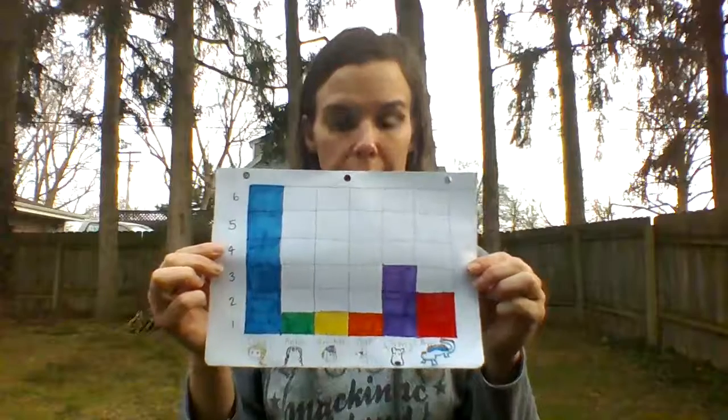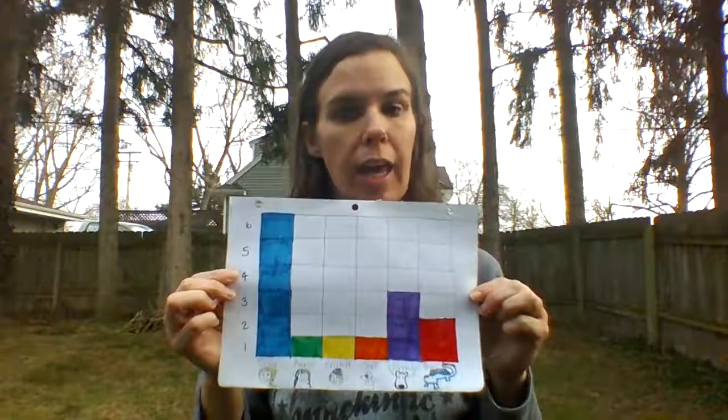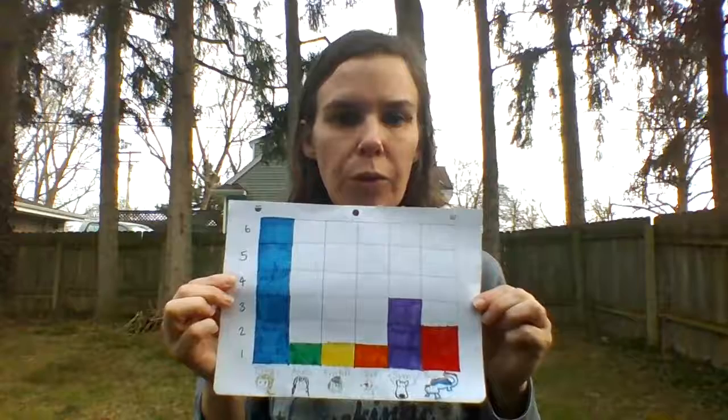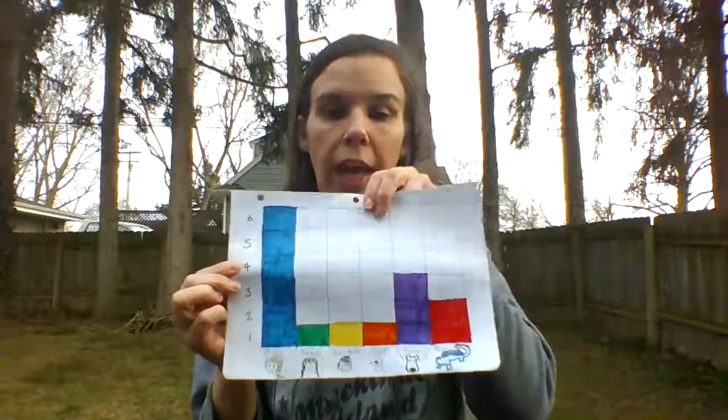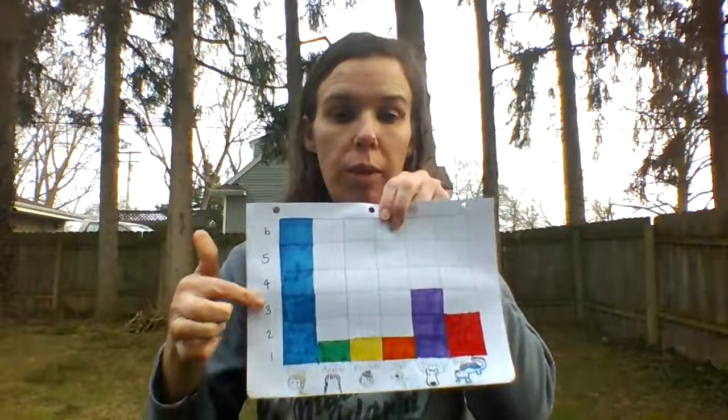Alright, so preschool friends, I'm gonna take a picture of this and put it on Story Park. And you are welcome to make your own graph. And as you can see, we put all the characters on one side, the bottom. And then we measured with numbers going up. Alright?